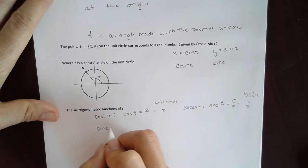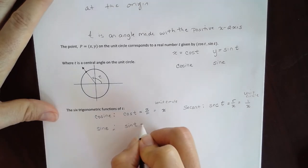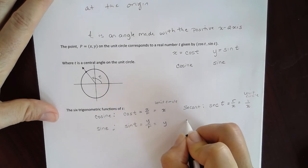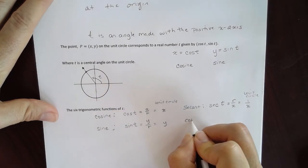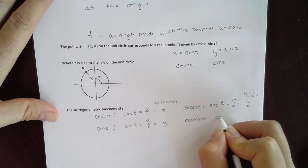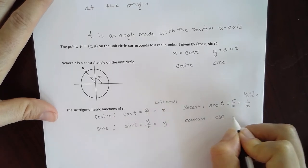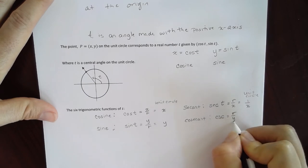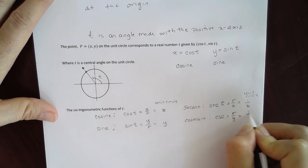Sine is another trig function. So sine t will be equal to y over r. But since r is 1, it's just going to be y. And its reciprocal is going to be cosecant. And that is going to be csc for the cosecant. So that would be r over y, or in this case for unit circle, 1 over y.